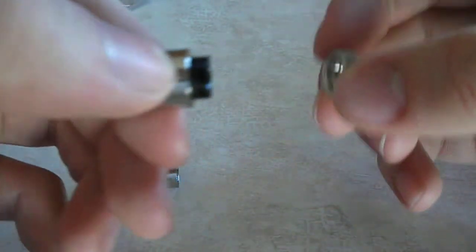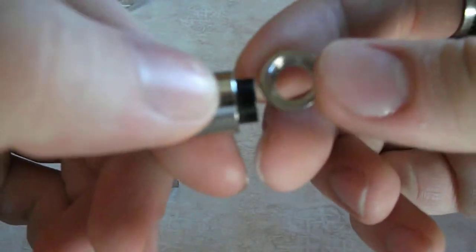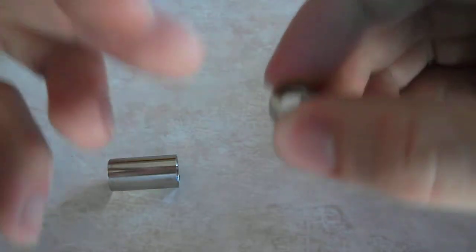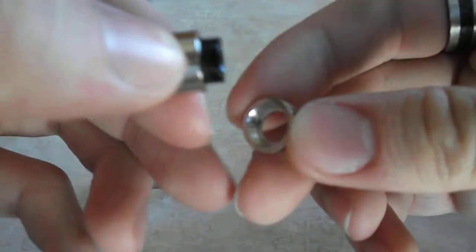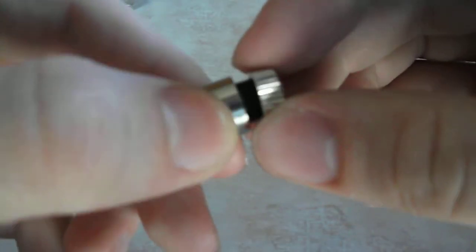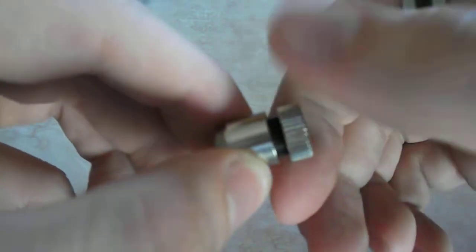And here is the cap. This goes on the end of the lens. This is hollow. There is not a glass lens or anything there. I guess it's just to complete it and protect the lens itself.